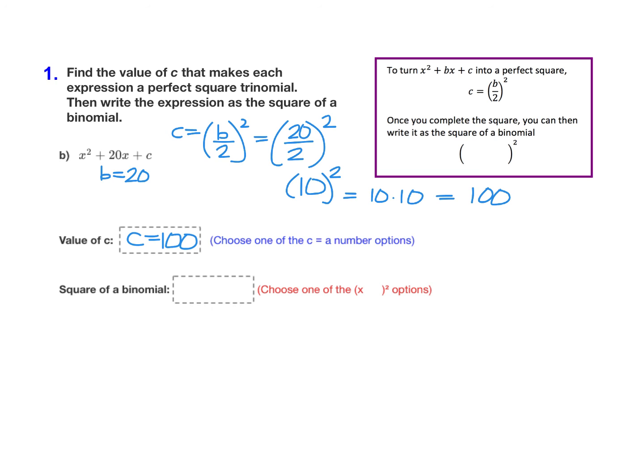Then, to get our factored form, it always factors to x plus b over 2 squared. So what did we have for b divided by 2 before we squared it? Well here, 20 over 2 made 10.